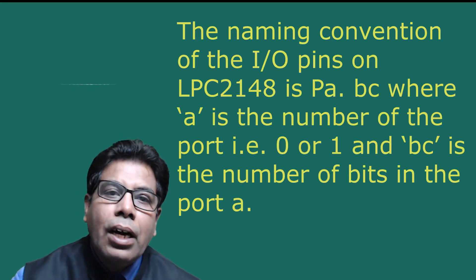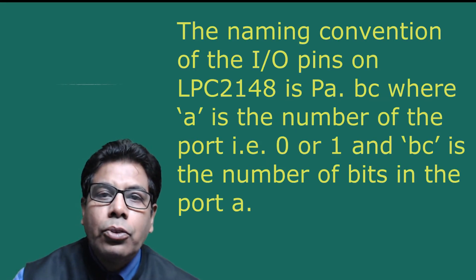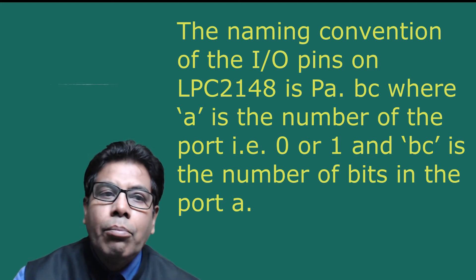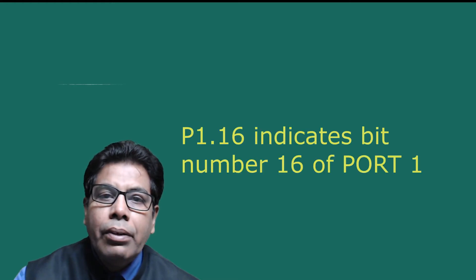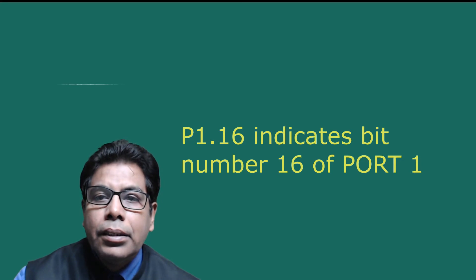The naming convention of the IO pins on LPC 2148 is Pa.bc, where 'a' is the number of the port (0 or 1) and 'bc' is the number of the bit in the port. For example, P0.0 indicates bit 0 of port 0, and P1.16 indicates bit 16 of port 1. Port 0 is a 32-bit port.